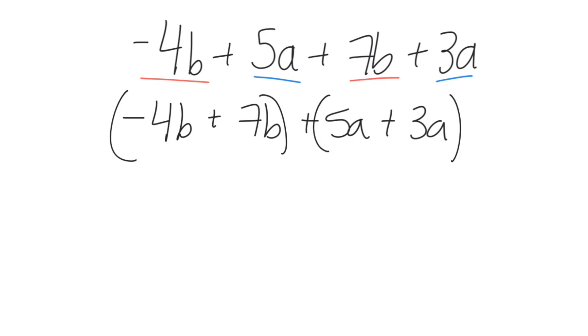Then remove the common factor from each set of grouped terms and place it in front of the brackets for the group of terms. The numerical coefficients remain in the brackets. So for the negative 4b plus 7b, we factor out the b to get negative 4 plus 7 in the brackets, plus, and then in 5a plus 3a, we factor out the a to get 5 plus 3 in the brackets.